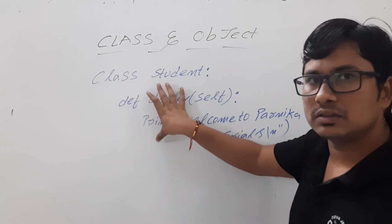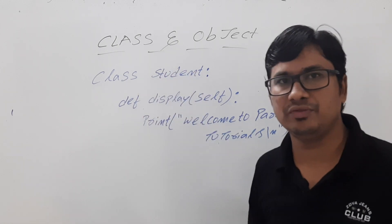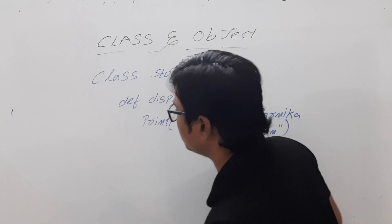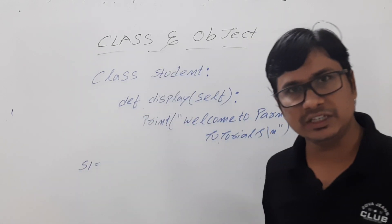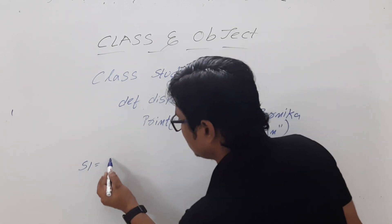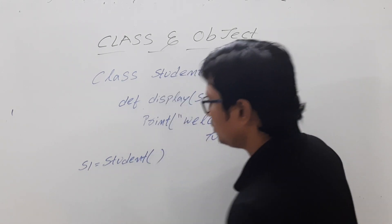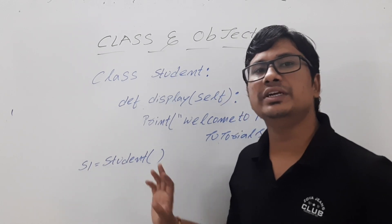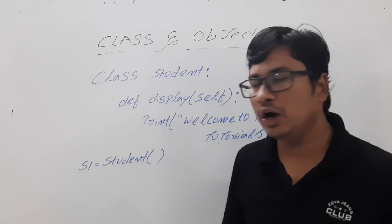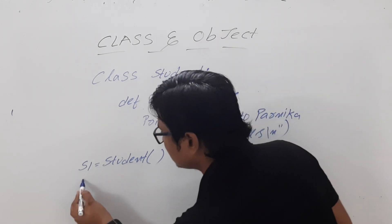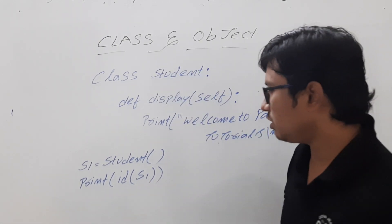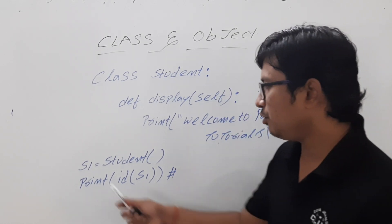Once a class is created, memory will not be allocated unless you create an object for it. You create an object `s1` by writing `s1 = student()`. Each object has an identity — you can identify an object by its name. So `s1` is an instance of the `student` class, and memory will be allocated at that point. If you want to know where object `s1` is stored, you can use `print(id(s1))`, which gives you the address location where the object is stored.